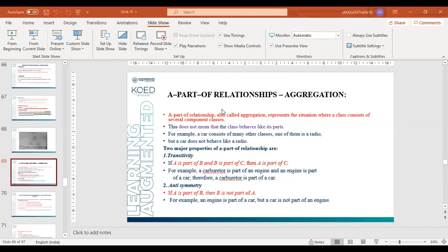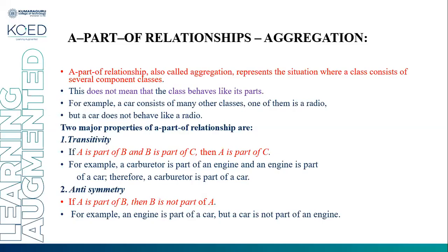Welcome to the video lecture on identifying object relationship attributes and methods. In the last video lecture we discussed association and inheritance relationships. In this video lecture we are going to discuss the part-of relationship and a case study which covers all the association, inheritance, and part-of relationships. The part-of relationship is known as aggregation.